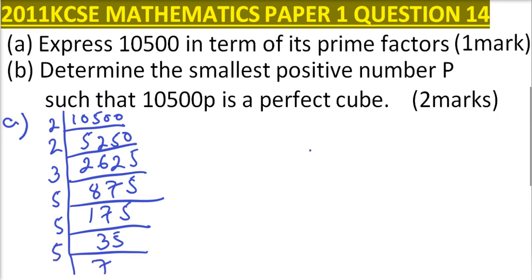So the prime factors of this number are 2 squared multiplied by 3 multiplied by 5 cubed multiplied by 7. So these are the prime factors of that number 10,500.